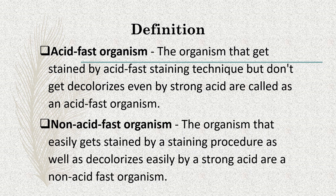The second one is non-acid-fast organism. The organisms that easily get stained by acid-fast staining procedure as well as easily get decolorized by a strong acid are called non-acid-fast organisms. In non-acid-fast organisms, the organism stains easily and gets decolorized easily by the acid-fast staining technique, so such organisms are called non-acid-fast organisms.